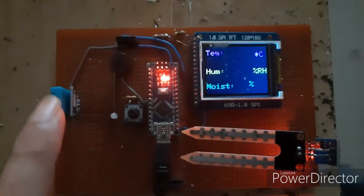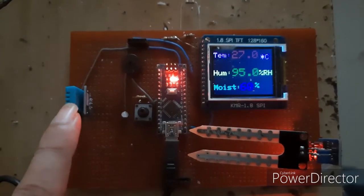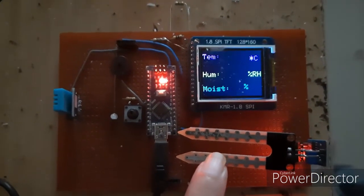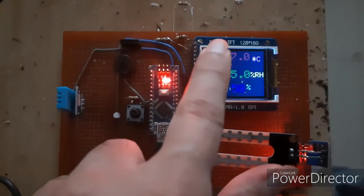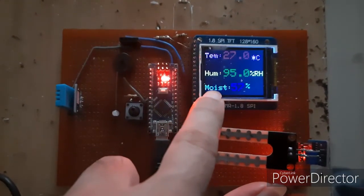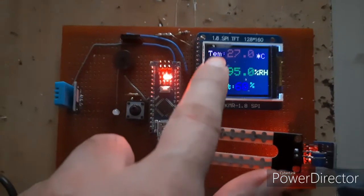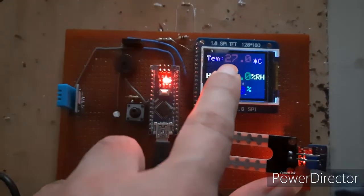This is the DHT sensor, digital humidity and temperature. This is the soil moisture sensor and we are displaying temperature, humidity and soil moisture level on the TFT panel.